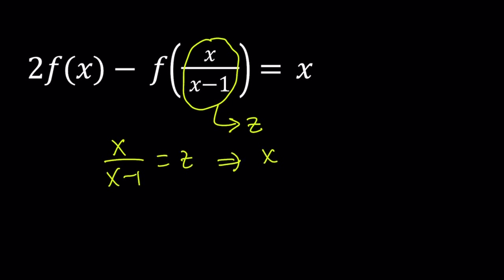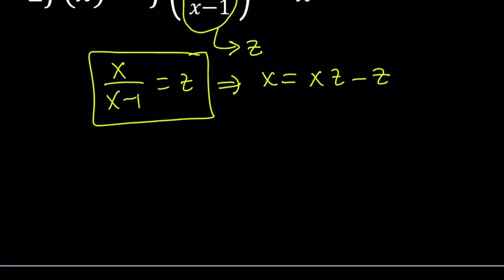From here we get x equals xz minus z. Now my goal is to solve for x. Let's put everything that contains x on the same side and the z on the left hand side. Z equals xz minus x. Then we're going to factor out x to get the x by itself. Divide both sides by z minus 1. You get x equals z over z minus 1.